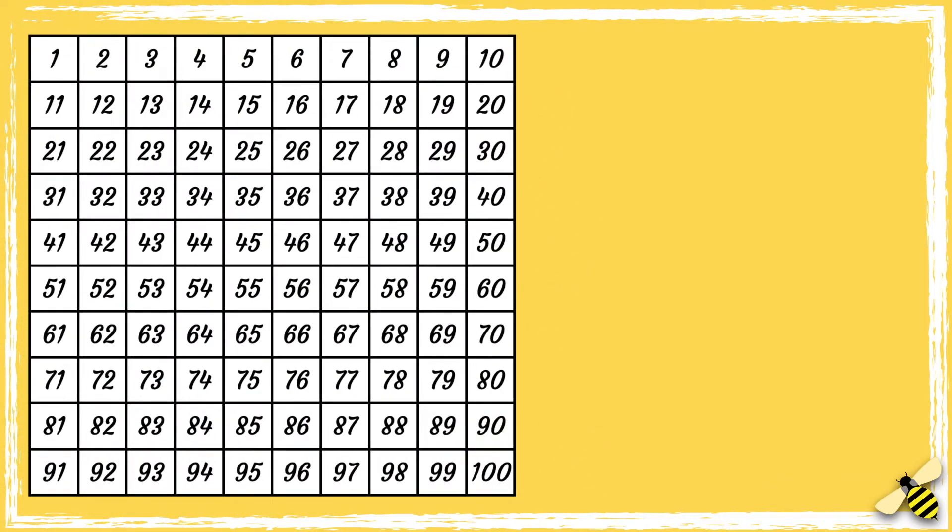Let's get warmed up first. Here is 100 square. Let's count up in tens from 48. 48, 58, 68, 78, 88, 98.